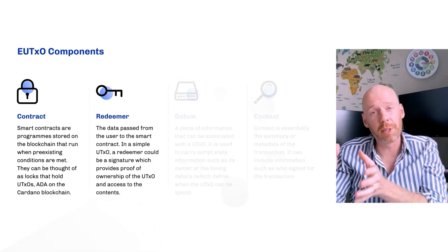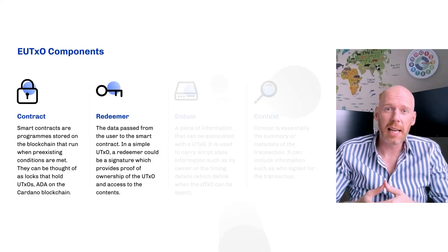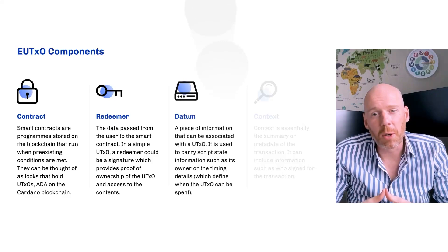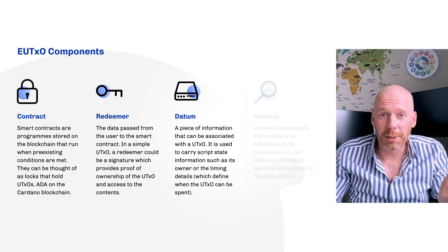We also have the concept of a redeemer. A redeemer is like a key — the piece of data passed in by the user of the smart contract to try to unlock those funds and spend them. We have an item called datum, and datum is some state that lives on the UTXO output. You can think of datum as a place to store a high score, some metadata, or some other data that's important to your app. Datum is kind of like the hard disk for the smart contract.